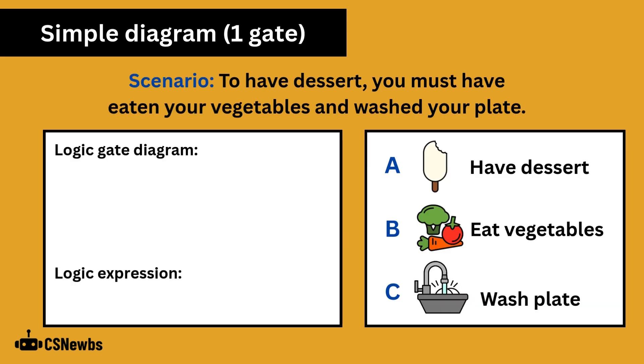Here's a scenario. To have dessert you must have eaten your vegetables and washed your plate. A represents having dessert, B represents eating your vegetables, and C represents washing your plate.